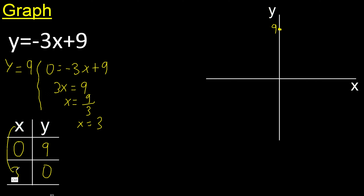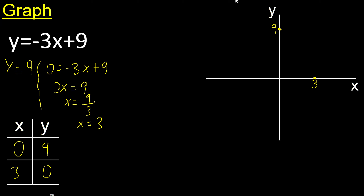x is 3. Positive. Negative. Positive. 3. Y is 0. Y 0 is here. 0, 3. Therefore, point is here.